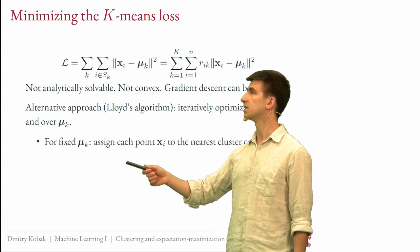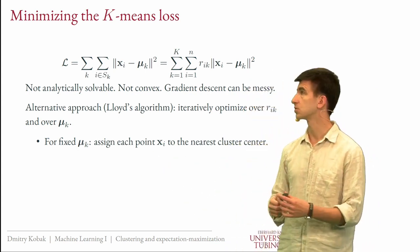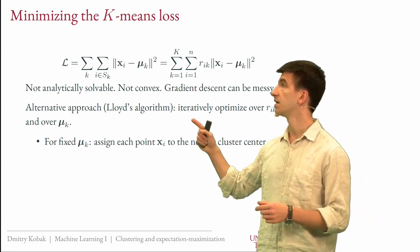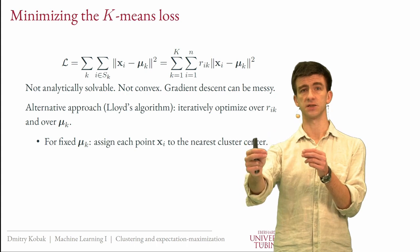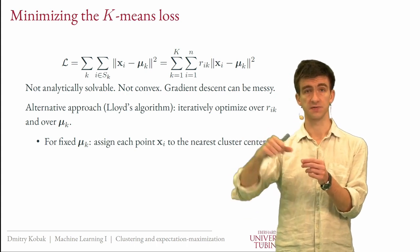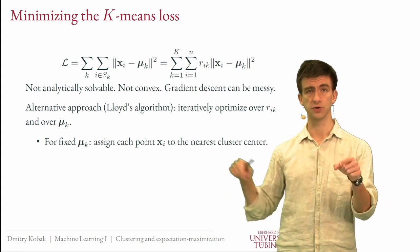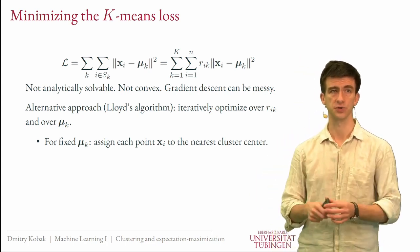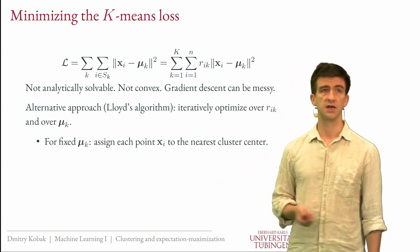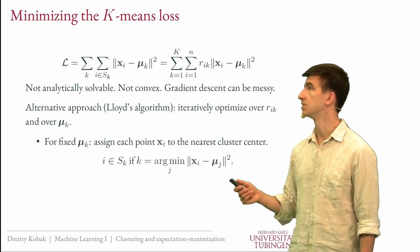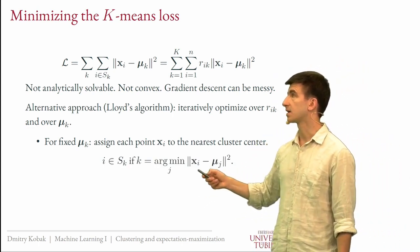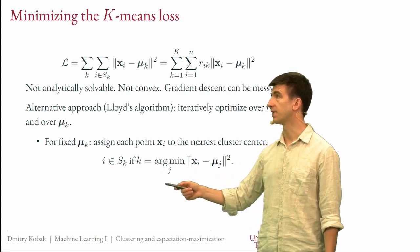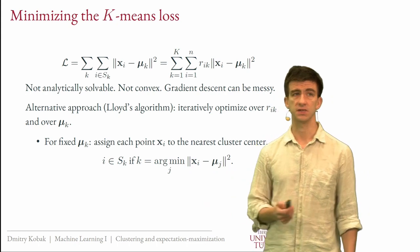The first step of Lloyd's algorithm: holding the mu's fixed, we want to find which cluster each point should go to. Each sample contributes its squared distance to its cluster representative. If the mu's are fixed, a point should go to the closest mu — this minimizes its contribution to the loss. So we assign each point to the nearest cluster center. For each sample i, we assign it to cluster k that minimizes the distance to mu_k.